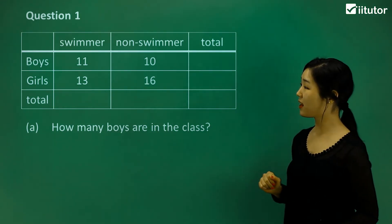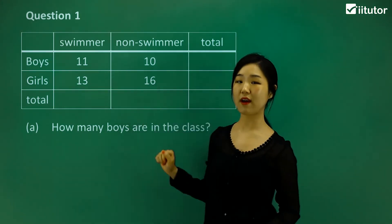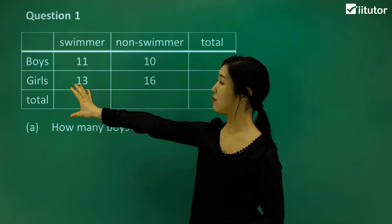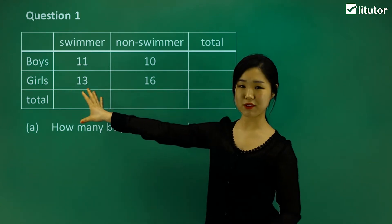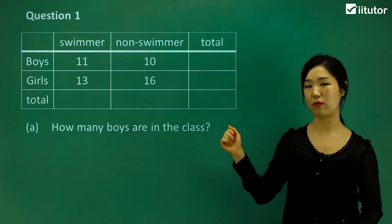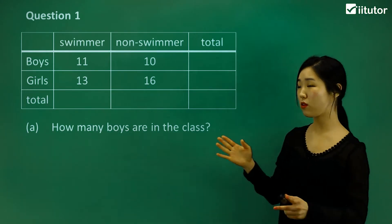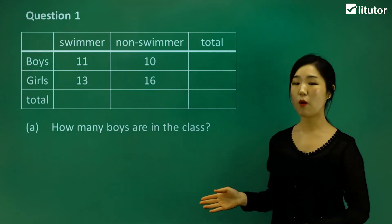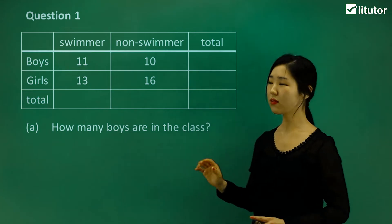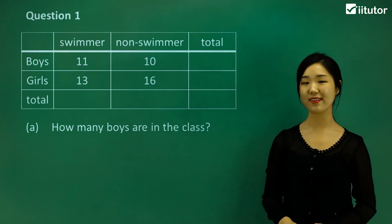In this table we've got boys and girls on one axis and swimmers and non-swimmers on the other. So they're categorized into either swimmers or non-swimmers, and either boys or girls. That gives us two different types of categories — hence a two-way table.